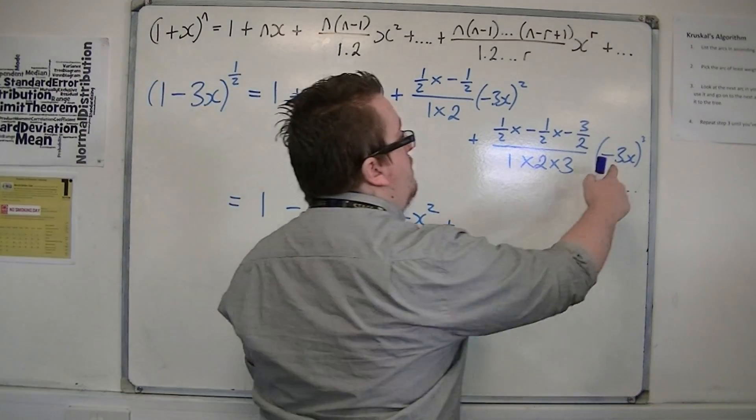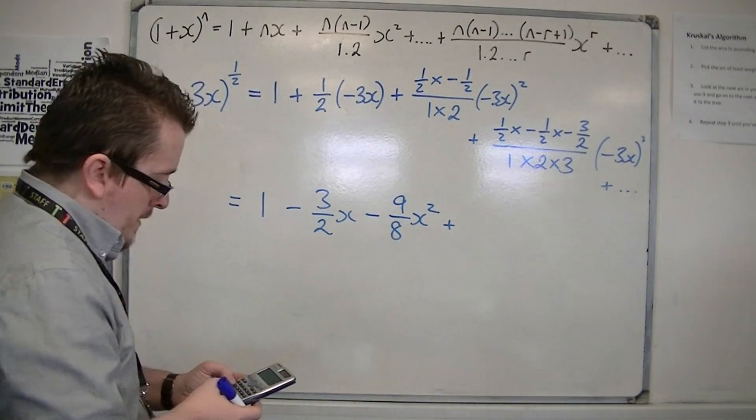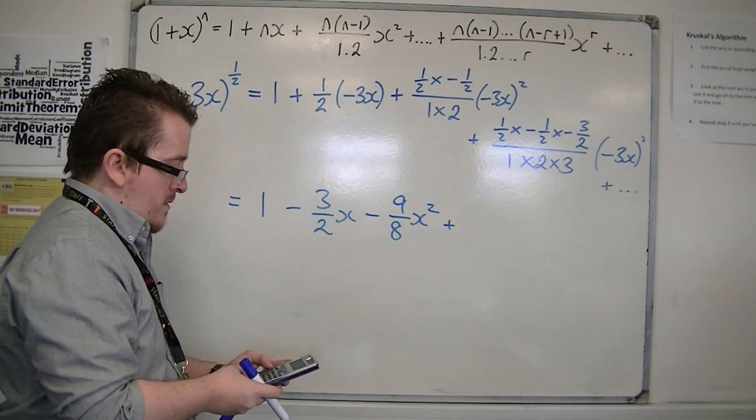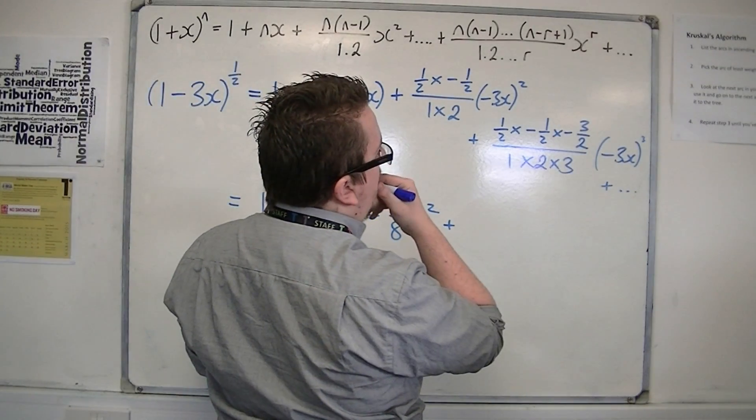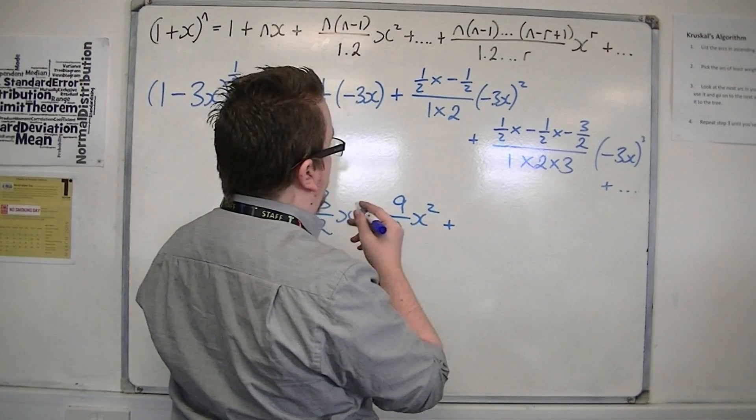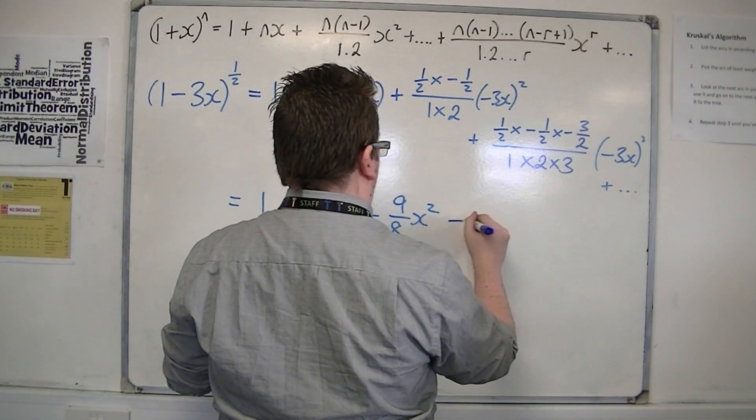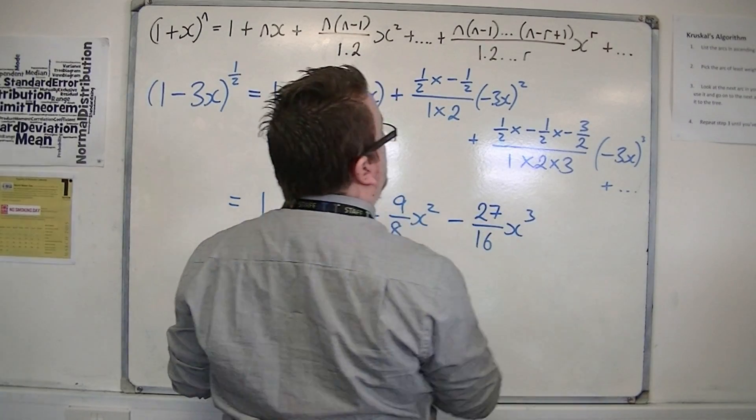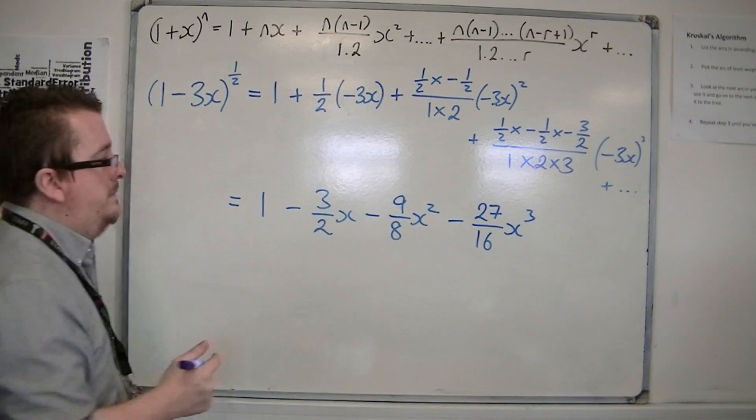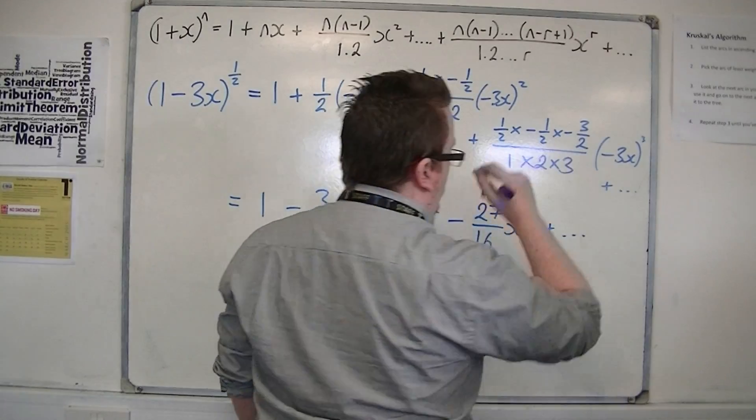Then I'm going to multiply that by (-3) cubed. So (-3) cubed gets me -27/16 x cubed, plus other terms.